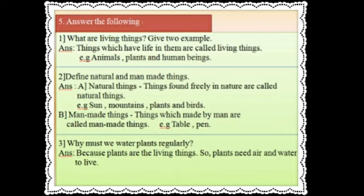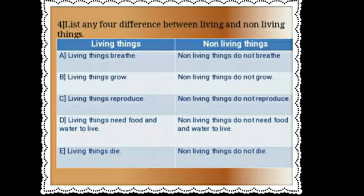Third question: why must we water plants regularly? Because plants are living things, plants need air and water to live — that is the reason why we must water them regularly. Fourth question: list any four differences between living and non-living things. I will give five differences. When you write the answer, make two columns in your science classwork.